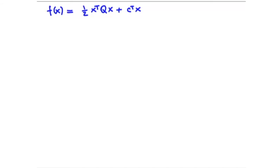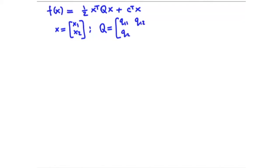Let's illustrate this with a two-variable example. Our vector x = (x₁, x₂), the matrix Q consists of four components: q₁₁, q₁₂, q₂₁, q₂₂, and the vector c has two components: c₁, c₂.